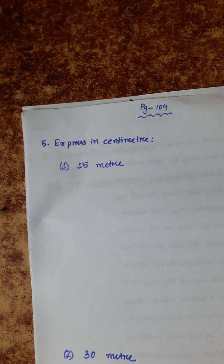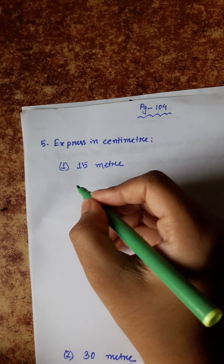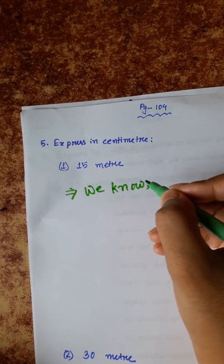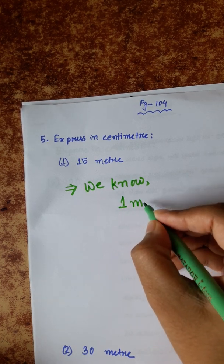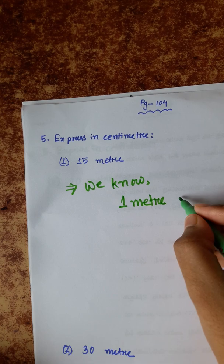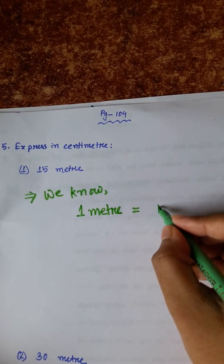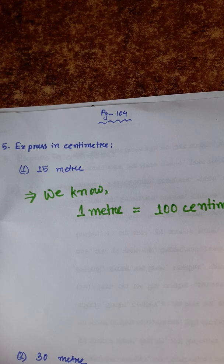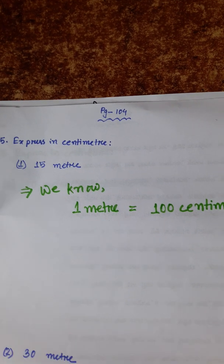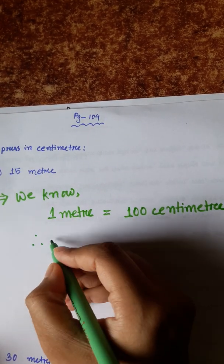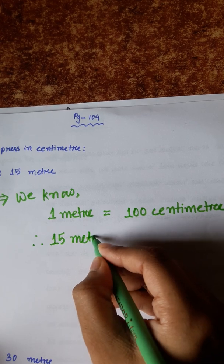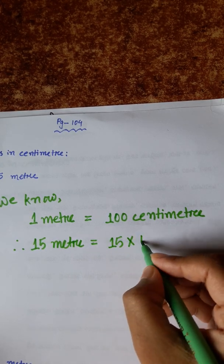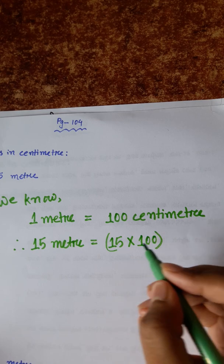We have to convert it into centimeter. We can write, we know 1 meter is equal to 100 centimeter. So 15 meter is equal to 15 into 100 centimeters.